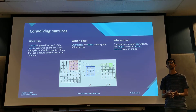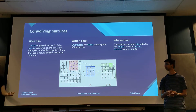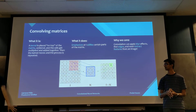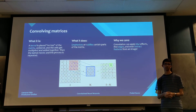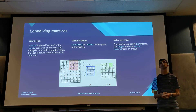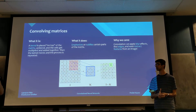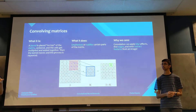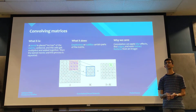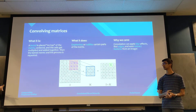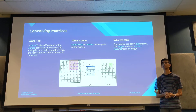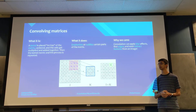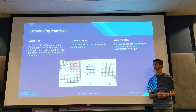Why is this important? Convolution lets us isolate certain parts of the image, search for features, and extract them. It also allows us to do other things like blur effects, which we'll talk about later.